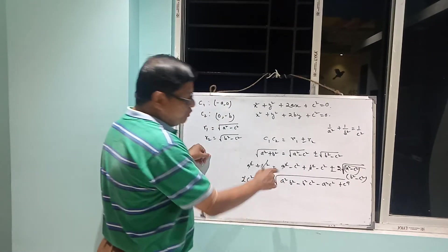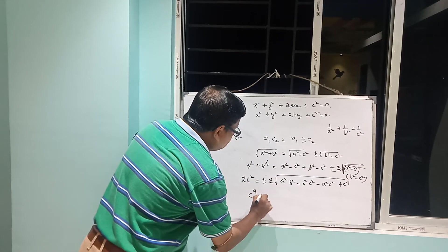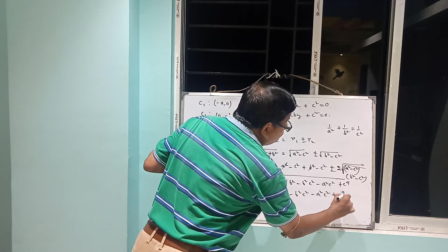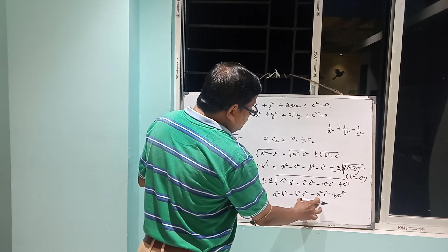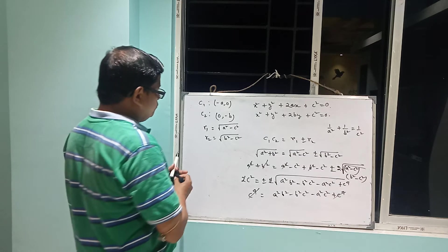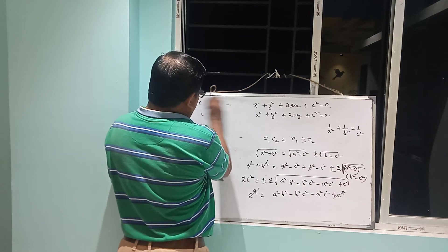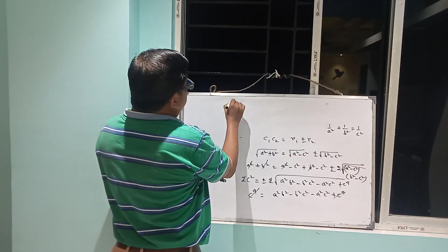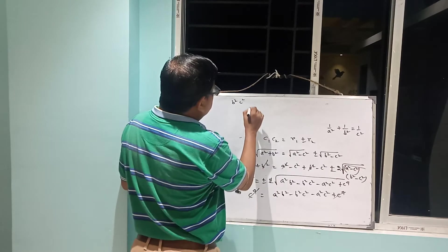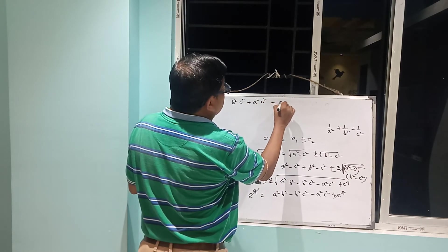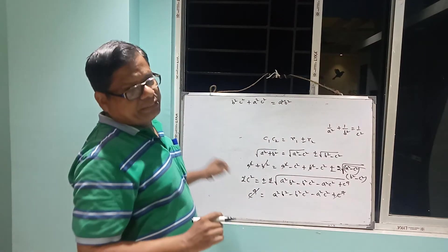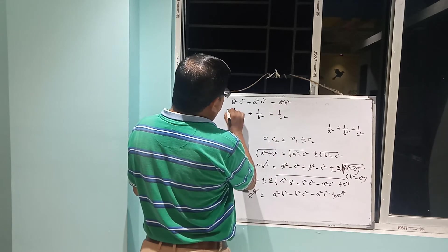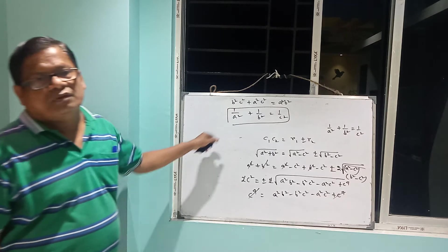The c⁴ terms cancel on both sides. Taking the negative terms to one side: b²c² + a²c² = a²b². Dividing both sides by a²b²c²: 1/a² + 1/b² = 1/c². This completes the proof.